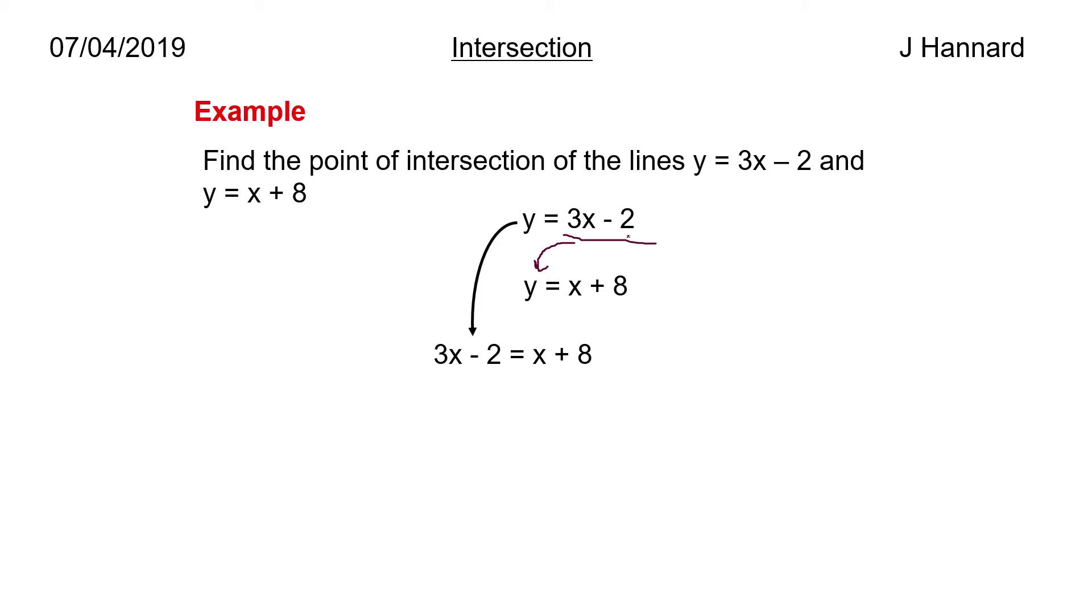Then normal service resumed. We work out what x is, we get our x is on its own, 2x equals 10. We want singular x so x equals 5. We then stick that x equals 5 back into our original equation and we work out that y is 3 times 5 minus 2 which is 13. So y is 13 and there's your coordinate, easy as that.